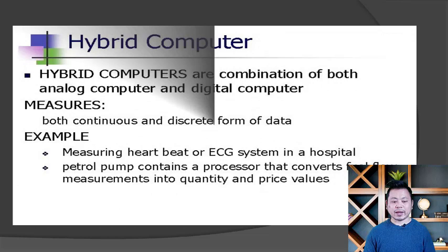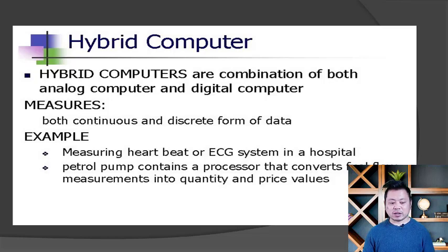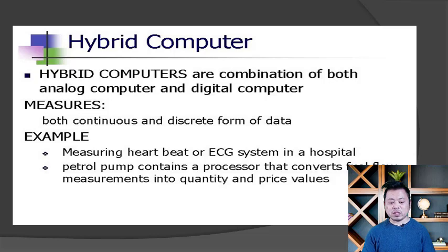Hybrid computers are the combination of both analog computers and digital computers. Hybrid computers measure both continuous and discrete forms of data. Continuous data has infinite values with continuously fluctuating measurements. For example, measuring heartbeat or ECG — electrocardiogram — where the heartbeat is measured. ECG is used in hospitals.